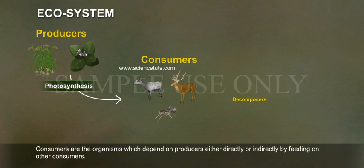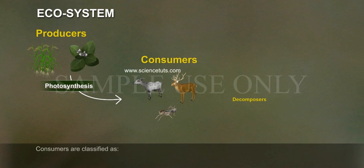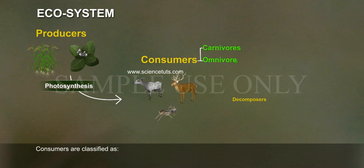Consumers are the organisms which depend on producers either directly or indirectly by feeding on other consumers. Consumers are classified as carnivorous, omnivorous, and parasites.